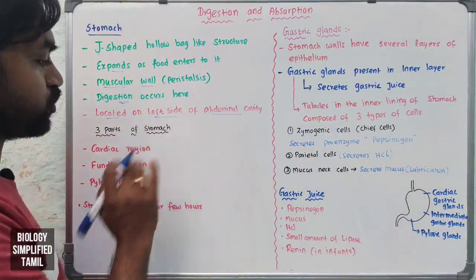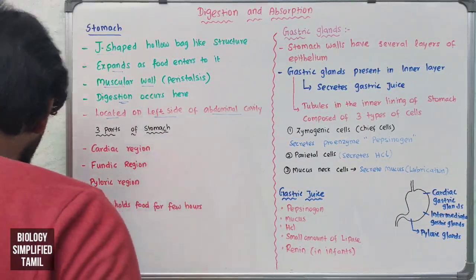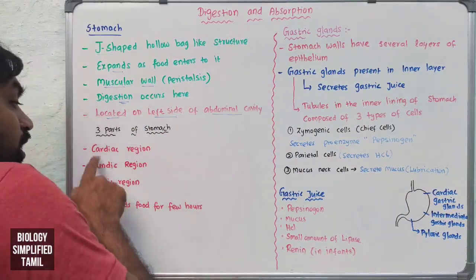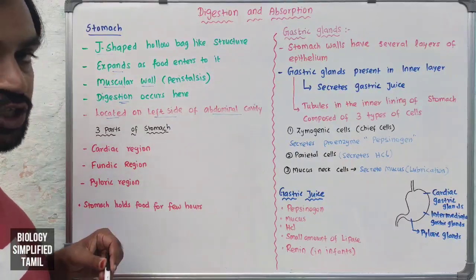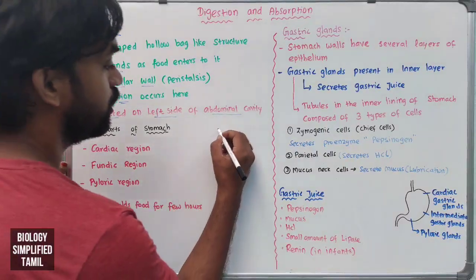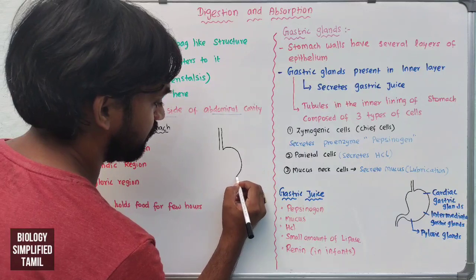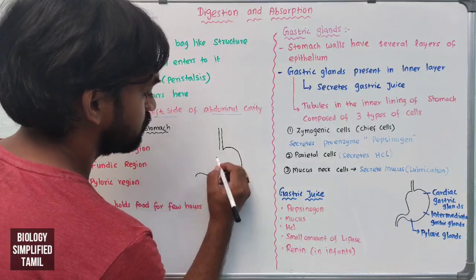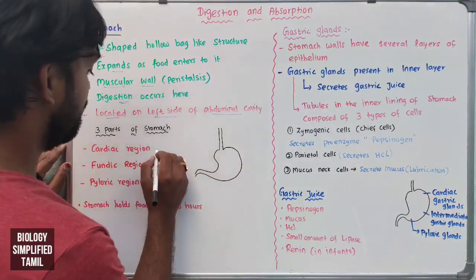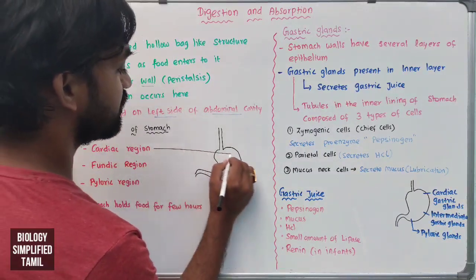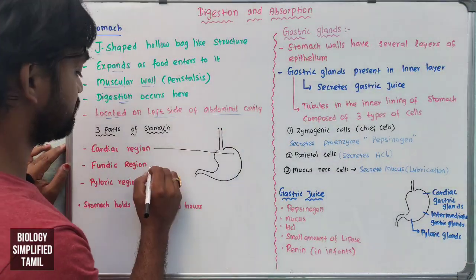There are three parts of the stomach: the cardiac region, fundic region, and pyloric region. The esophagus connects to the J-shaped stomach at the cardiac region — this is the heart region.